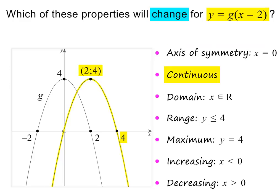The parabola will still be continuous in this position, because you can still draw it without lifting your pencil. The domain is still all real values of x, because the graph still extends to the left and right without any breaks. The range is still all real values of y less than or equal to 4, because the horizontal shift does not change the y-coordinate of the turning point. And for the same reason, the maximum value is still y equals 4.